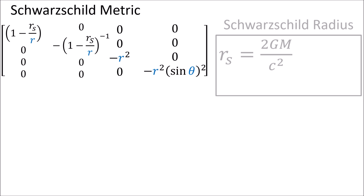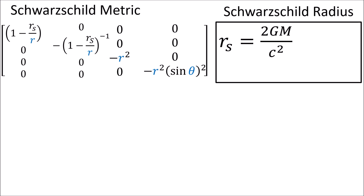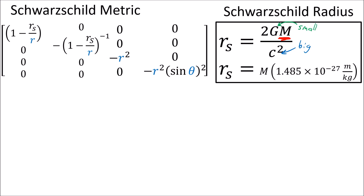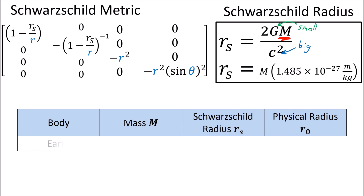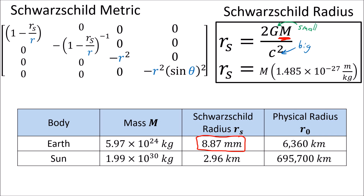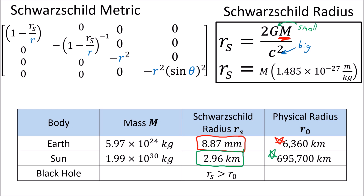The Schwarzschild radius rs is 2GM over c squared, and it only depends on the mass of the object and physical constants. Since G is very small and c squared is very large, the Schwarzschild radius is very small for most objects. For example, the Schwarzschild radius for the Earth is only about 1 cm, and for the Sun it's only about 3 km — both deep inside the physical radius of each body. When an object is so incredibly massive and dense that its Schwarzschild radius becomes larger than its physical radius, we call it a black hole, and the Schwarzschild radius is called the event horizon.